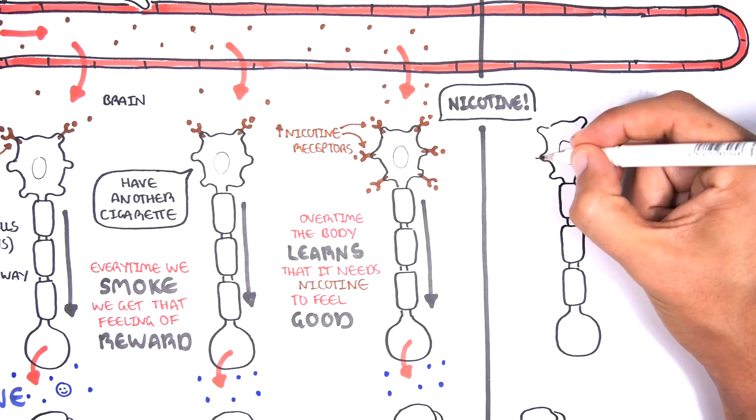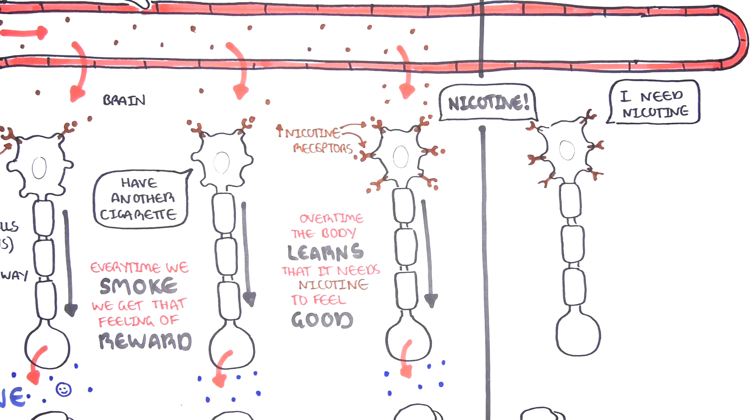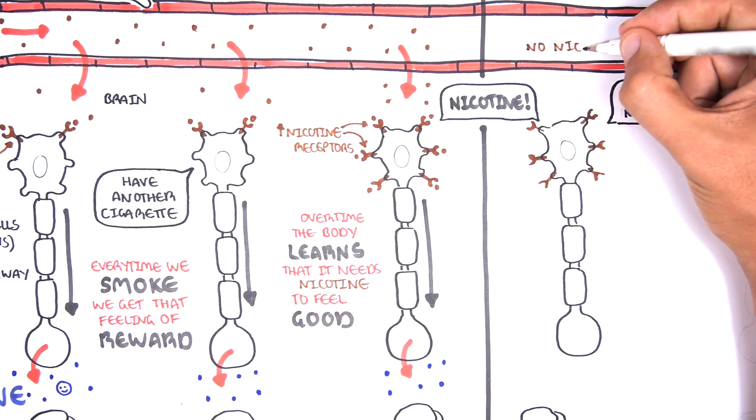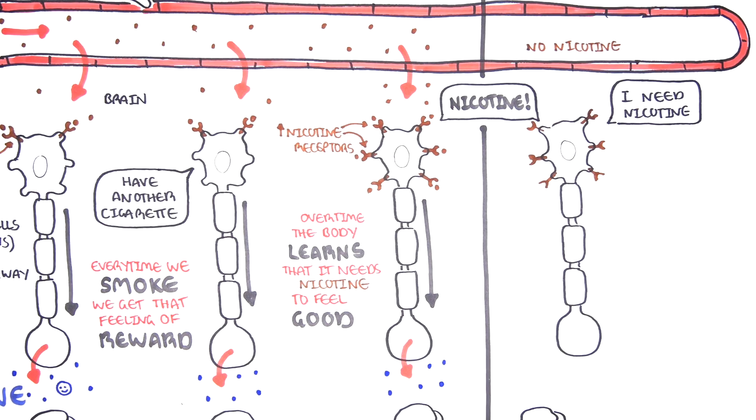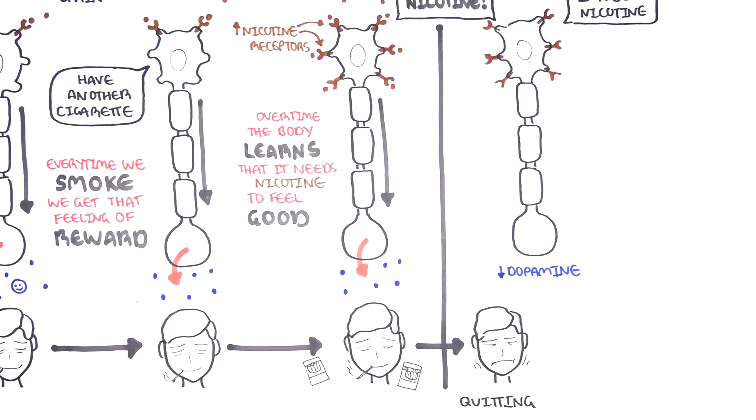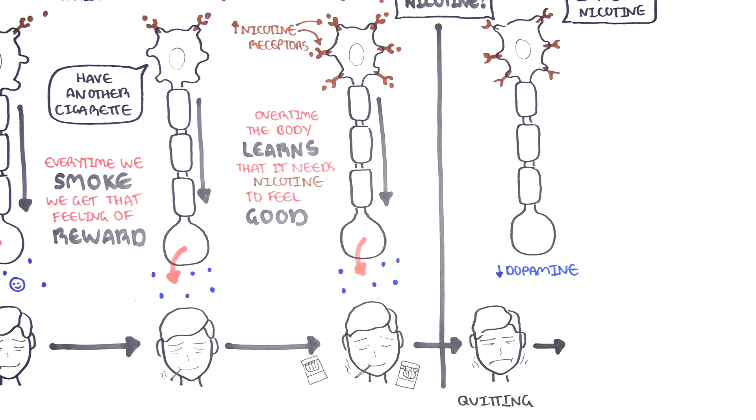The longer we smoke, the stronger the cravings for nicotine become. With no nicotine to bind to nicotine receptors, the reward pathway is not stimulated anymore. This means the brain releases less dopamine. With less dopamine, people can get withdrawal symptoms.